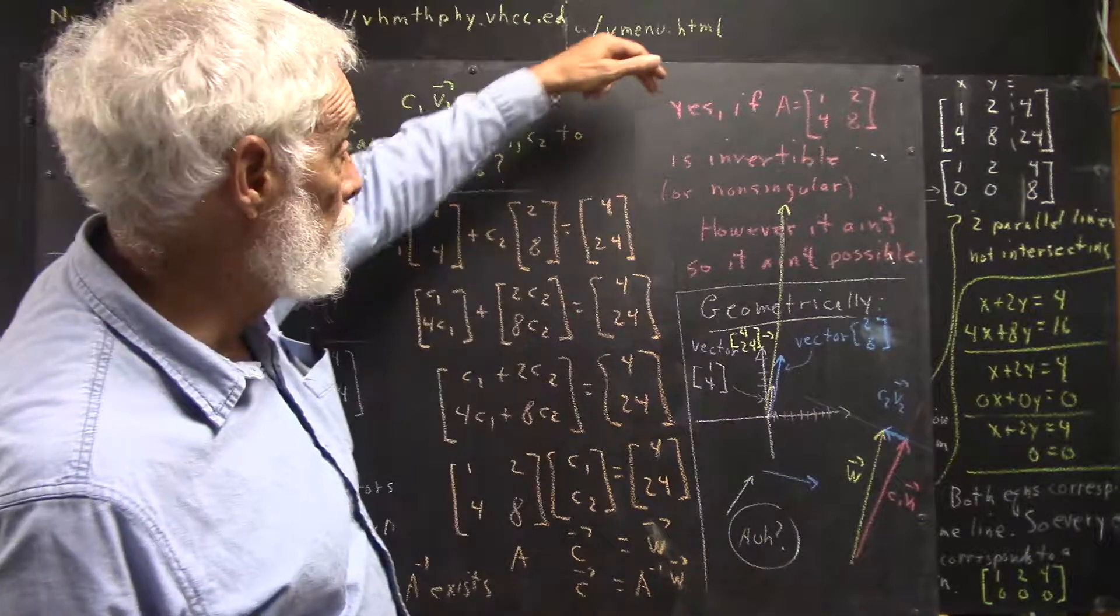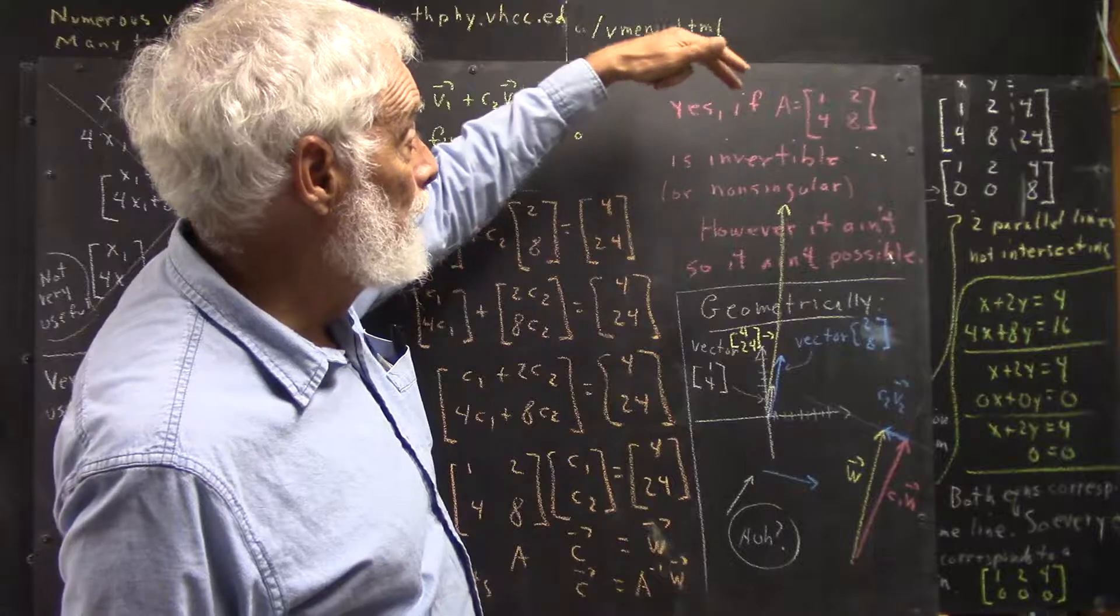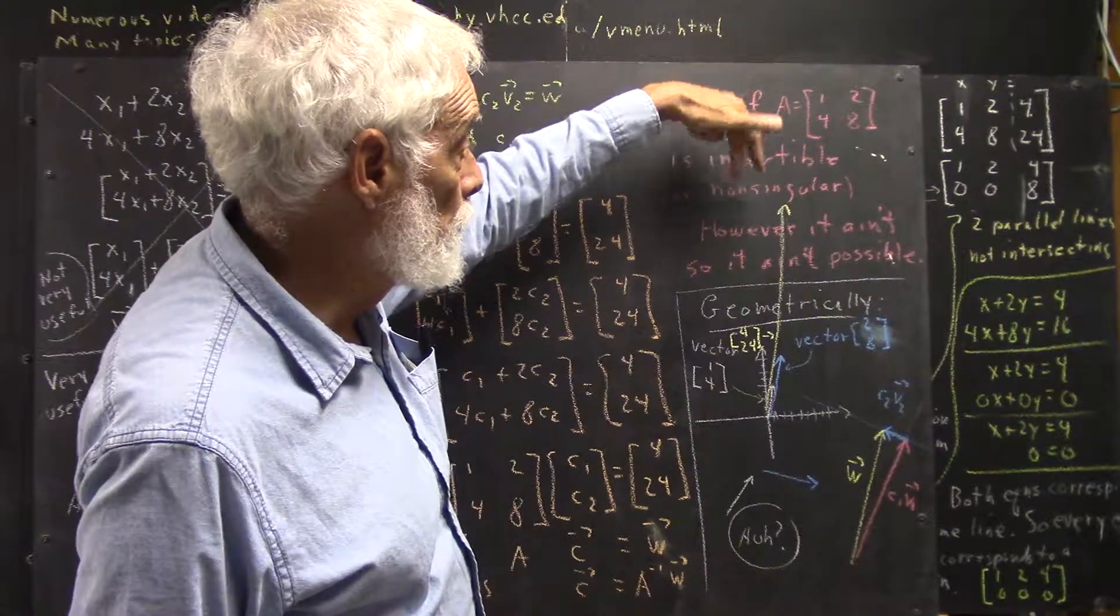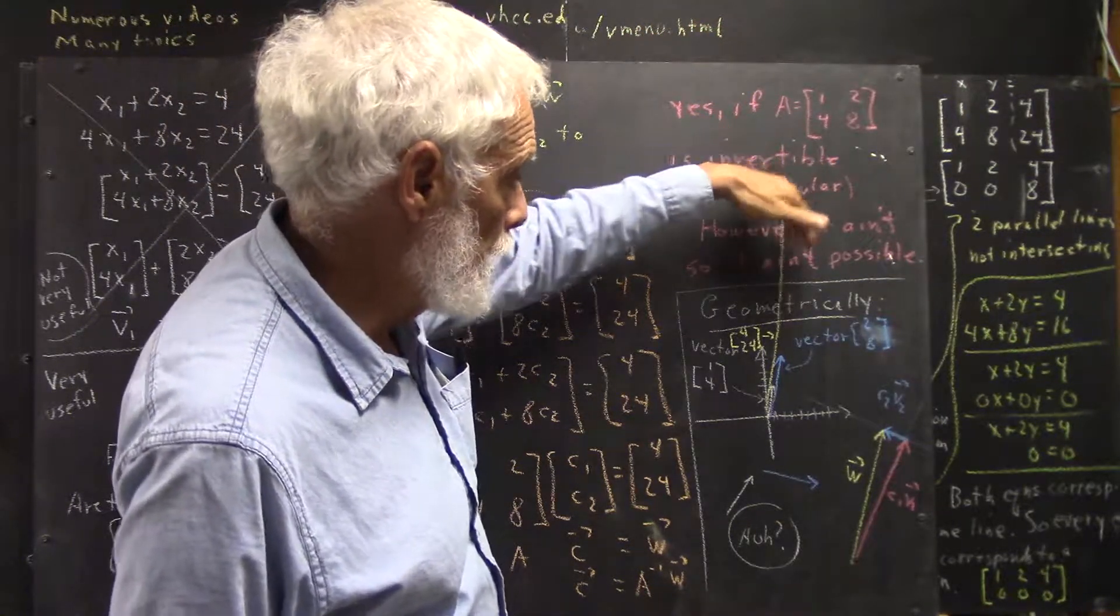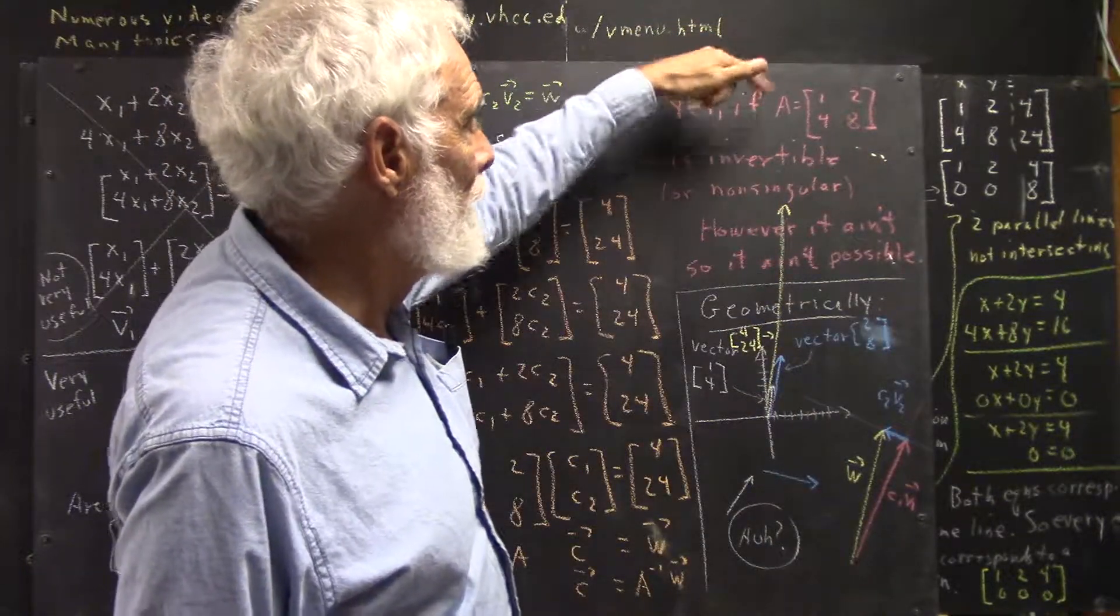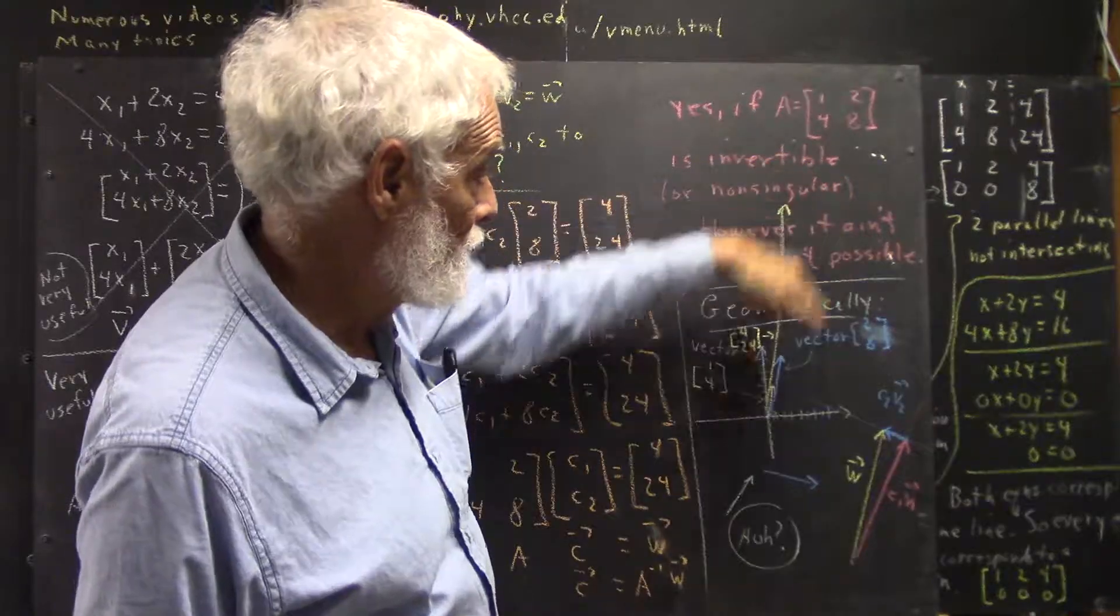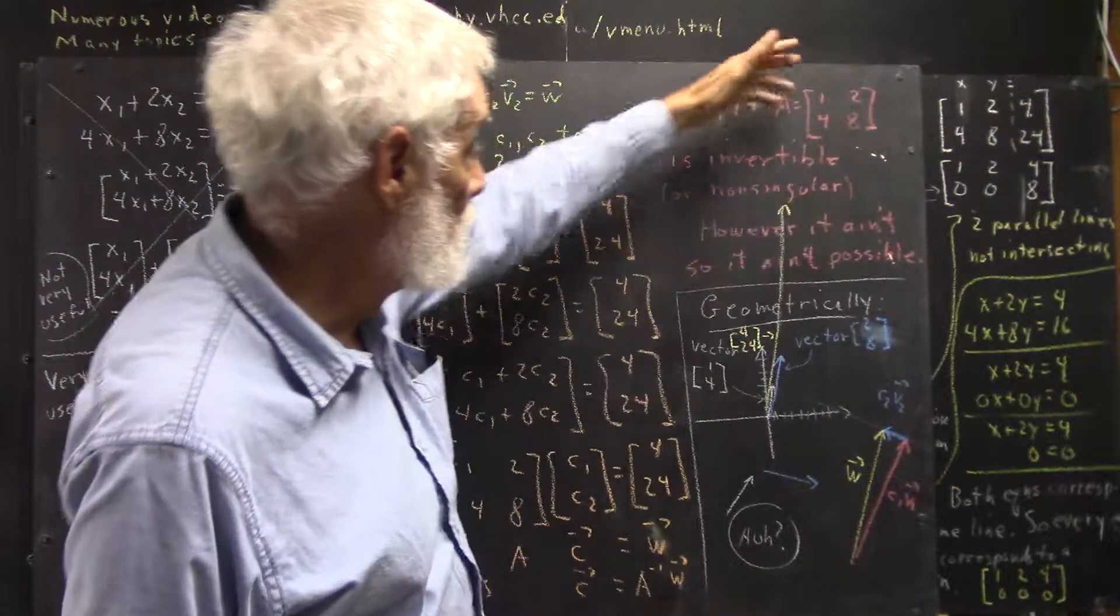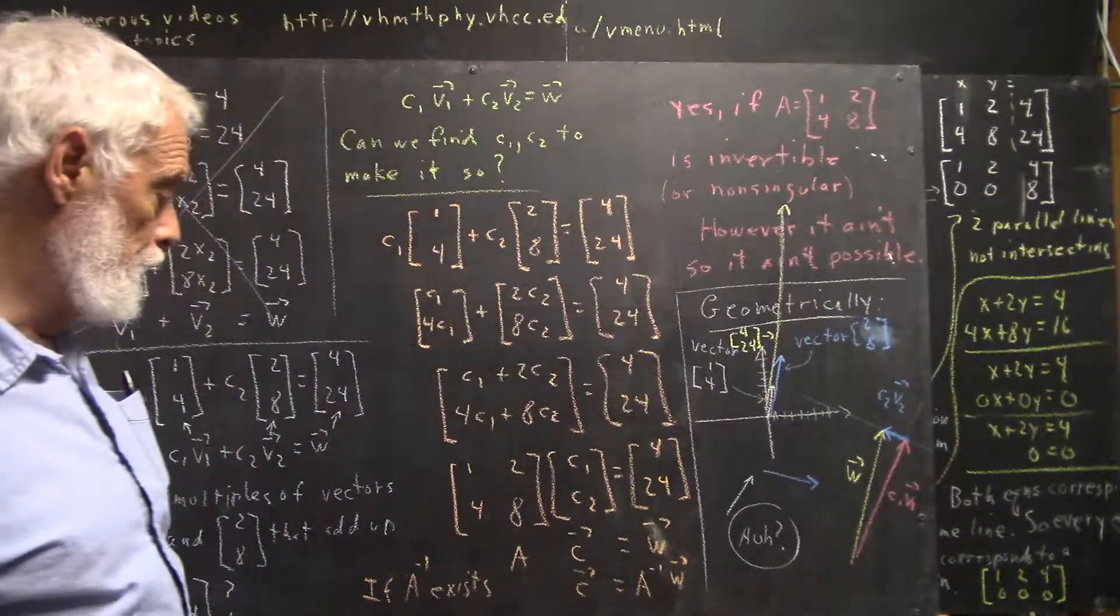So it ain't possible. In other words, A is not non-singular, so it's not possible to reduce it to the identity. You don't have an inverse.